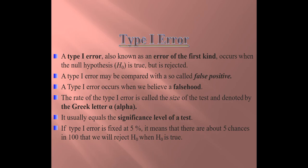A Type 1 error, also known as an error of the first kind, occurs when the null hypothesis (H0) is true but is rejected. A Type 1 error may be compared with a so-called false positive. Suppose we are considering a test — if it is coming false positive, that means the disease may not be present but the laboratory test shows that it is positive. That is the same case with Type 1 error. Type 1 error occurs when we believe in falsehood.